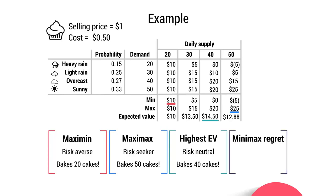Finally, we need to look at the minimax regret model, also used by the risk neutral. This is about choosing the option with the lowest maximum regret — regret being the loss you feel by not selecting the best possible option. Starting with 50 cupcakes: the highest regret occurs when it rains heavily and demand is only 20. You make a loss of $5, whereas the highest possible profit when demand is 20 is $10, giving a regret of $15.